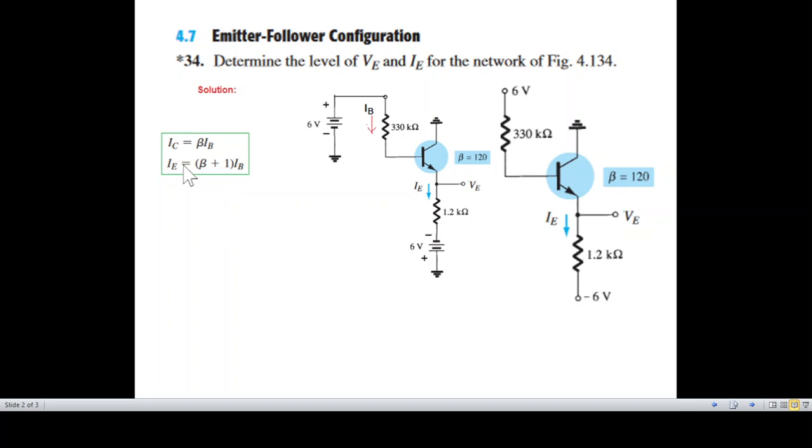We'll follow this formula that the emitter current is beta plus one times the base current IB. We write the KVL equation from this loop.